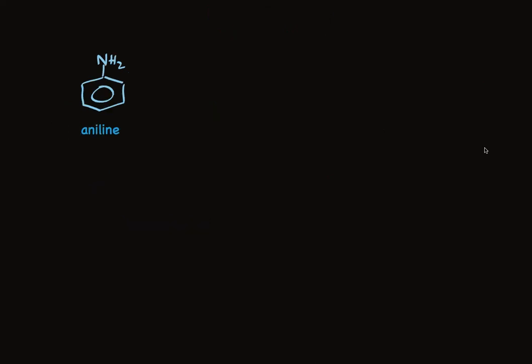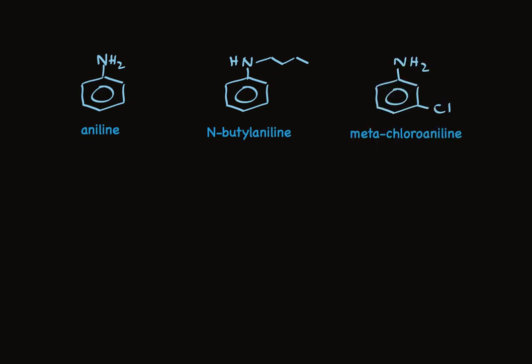Benzene aromatic amines have their own special common name: aniline. When there's something else attached to the nitrogen, you simply name it as a substituent. This is N-benzylaniline — we have to put the N in front to indicate the benzyl group is attached to the nitrogen, not a place on the ring. And we have meta-chloroaniline. For disubstituted benzenes, we can use the ortho, meta, para designation. If there were more than two substituents, we'd have to use the systematic name with numbering for the positions.